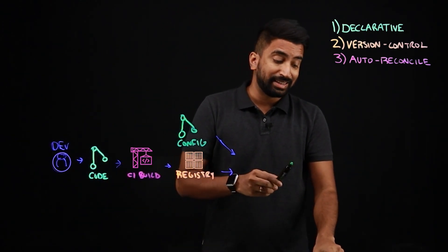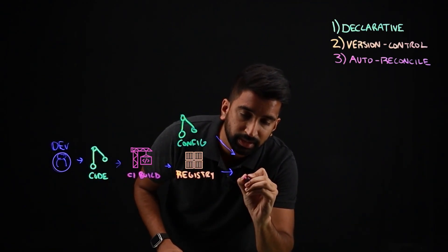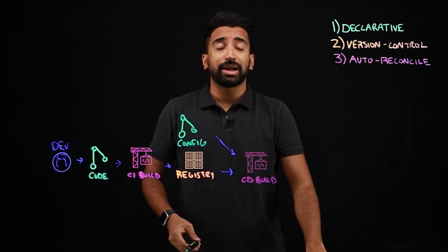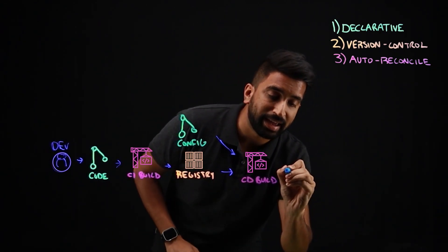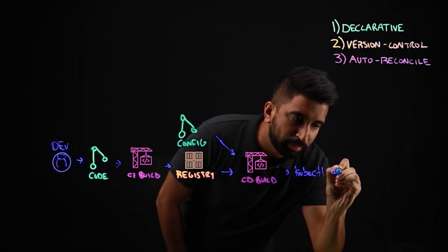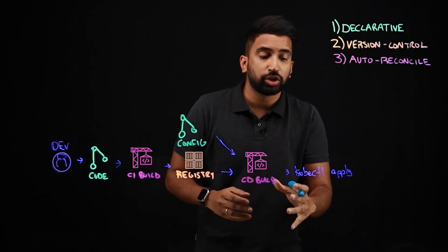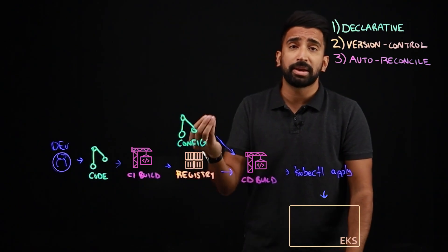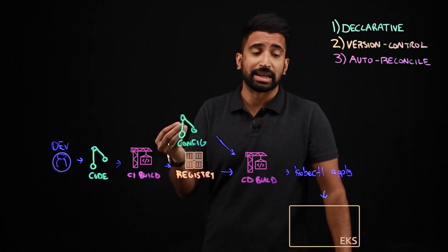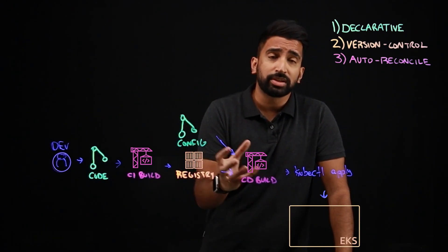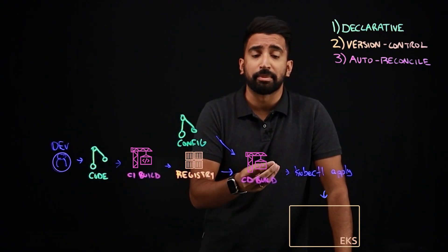And this is going to kick off a CD build. So not a CI build, but slightly different. So this build pipeline will probably do something like a kubectl apply to apply the YAML resources to our, let's say we have an EKS cluster here. Elastic Kubernetes Service is a managed way to run Kubernetes on AWS. So this kubectl apply command deploys the pods or deployments or whatever they might be.